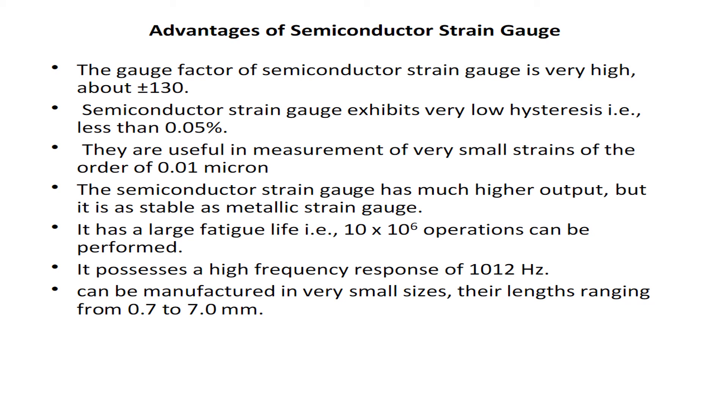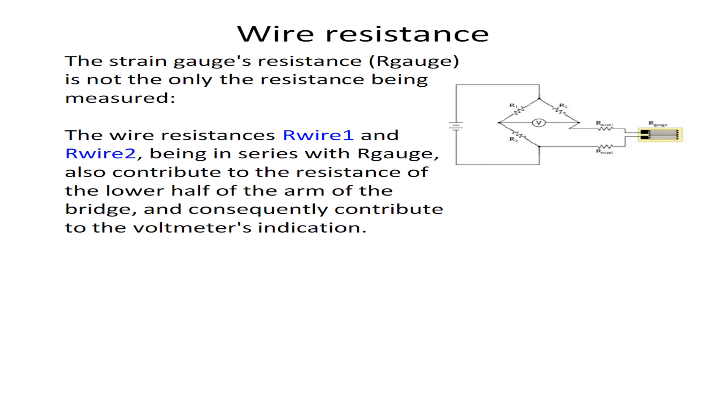The semiconductor strain gauge has much higher output but is as stable as metallic strain gauge. It has a large fatigue life: 10 × 10⁶ operations can be performed. It possesses a high frequency response of 10¹² hertz. They can be manufactured in very small sizes, their length ranging from 0.7 to 7.0 millimeter.